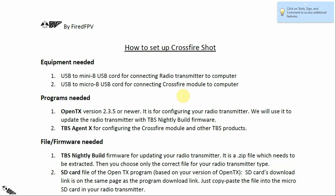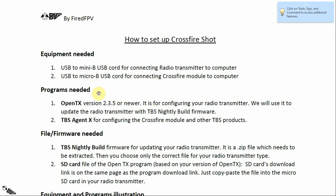The equipment you need is a USB to Mini-B USB cord for connecting your transmitter to the computer, and a USB to Micro-B USB cord for connecting the CrossFire module to the computer. There will be a picture for illustration later.